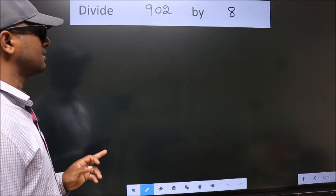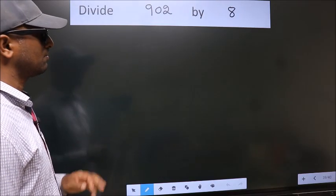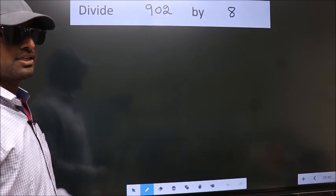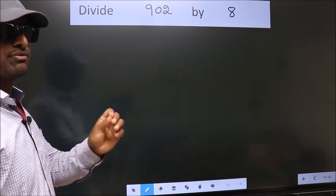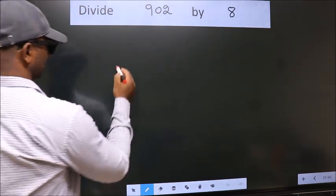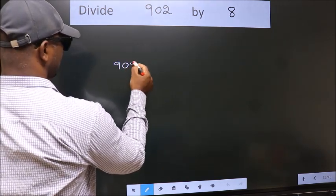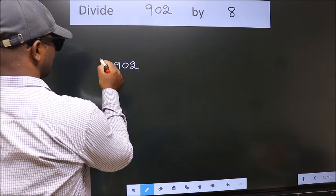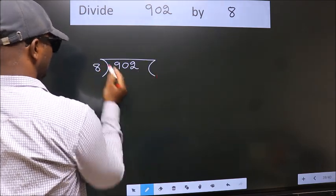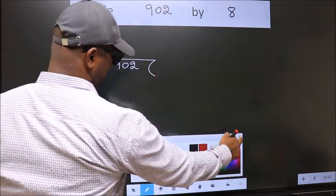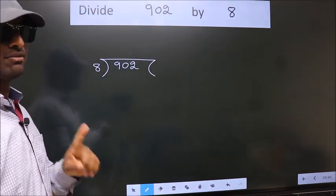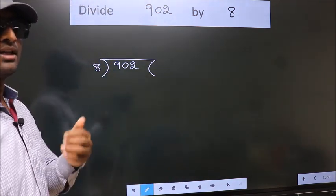Divide 902 by 8. To do this division, we should frame it in this way: 902 here, 8 here. This is your step 1.